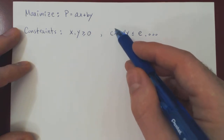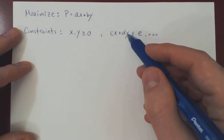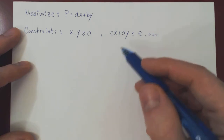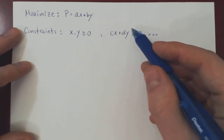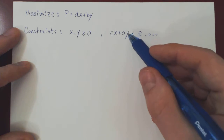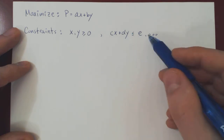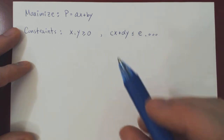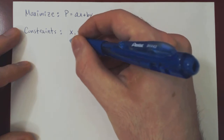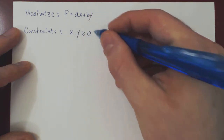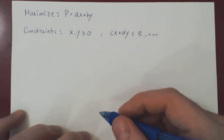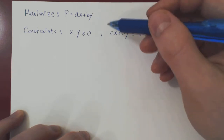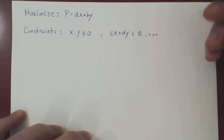So some multiple of x plus some multiple of y is at most a given constant. We may have one such condition, we may have 2, 3, 4, any number of them. But what will always be true is that x and y must be non-negative. The idea is: how can we attack this problem geometrically?